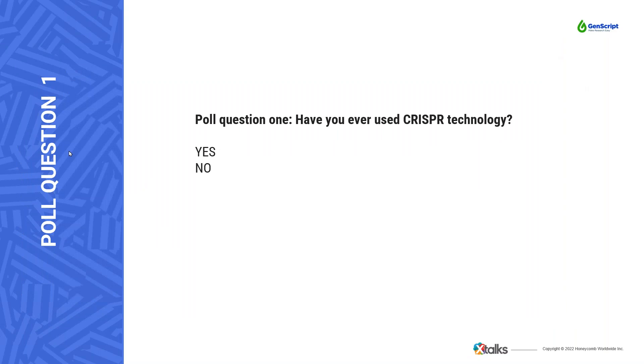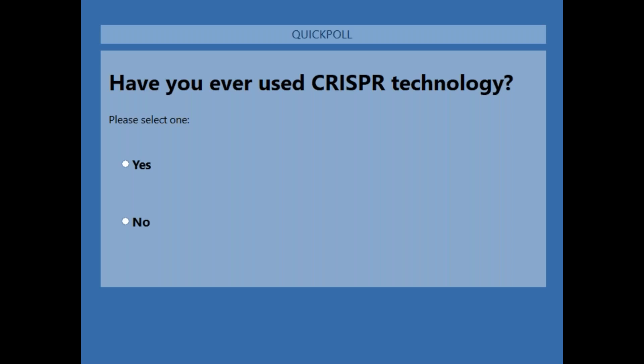Before I pass the mic and controls over to Jia, we have two poll questions to run back-to-back — your participation is strongly encouraged. Here's our first poll question: Have you ever used CRISPR technology? Please go ahead and cast your vote — yes or no. Once we've seen everyone participating, I'll close the polls, show the results, and then move on to poll question number two.